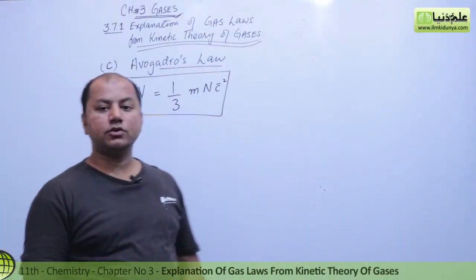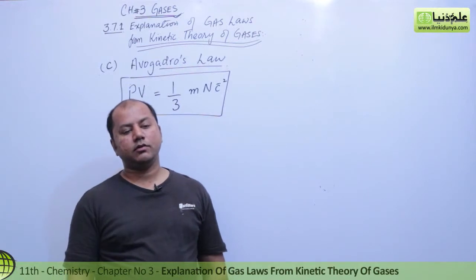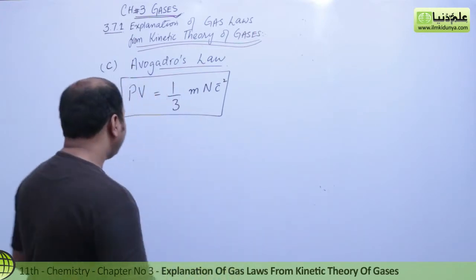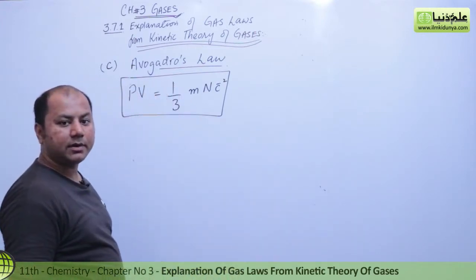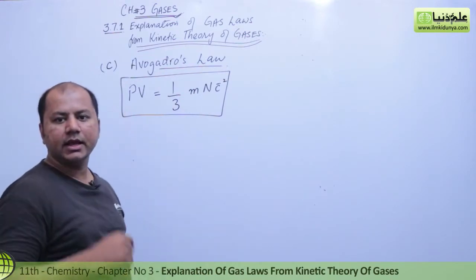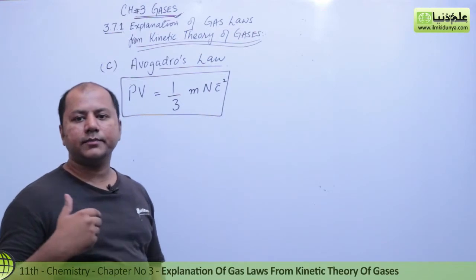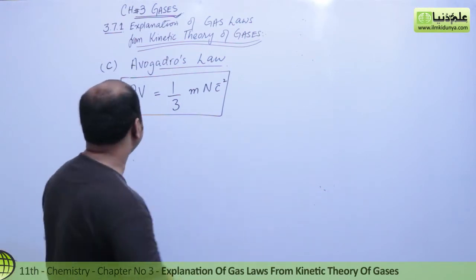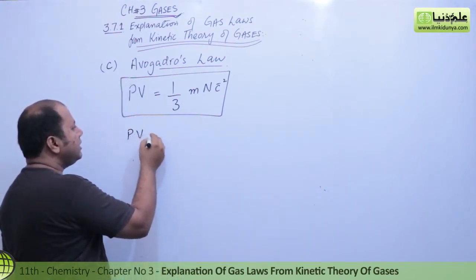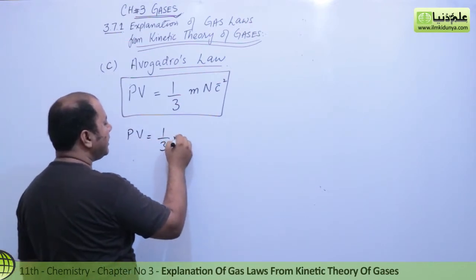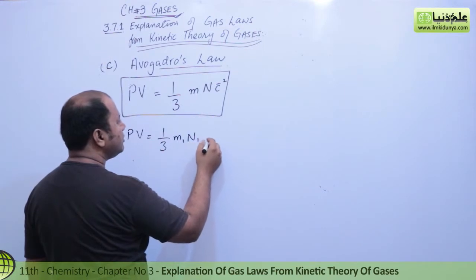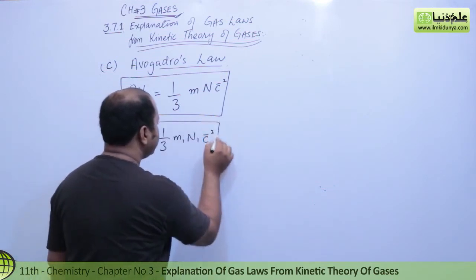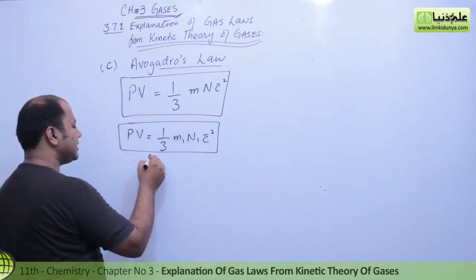Let's carry on with Avogadro's Law. We're going to interpret the kinetic equation of gases. We consider two gases, each in a separate cylinder. For the first cylinder, we write PV = (1/3) M₁ N₁ C̄₁², where M₁ is the mass, N₁ is the number of molecules, and C̄₁ is the root mean square velocity.